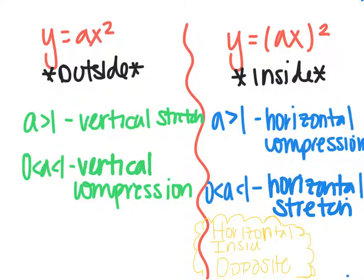So if a is outside the parentheses, like we have in this first problem here, then it's either going to be a vertical stretch or a vertical compression. If a is greater than 1, so 2, 3, 4, 5, it's a stretch.